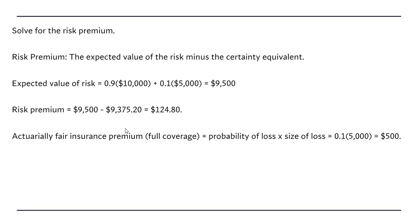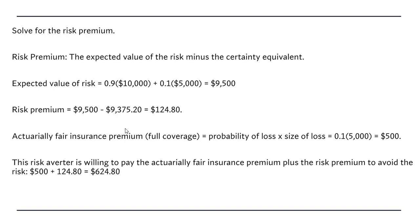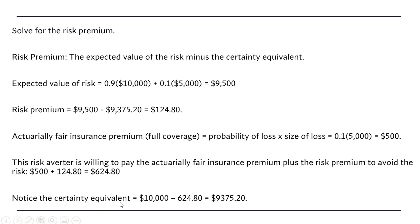For someone that is risk averse, the risk averter is willing to pay the actuarially fair insurance premium plus the risk premium to avoid the uncertainty. So in this case, a risk averter would be willing to pay as much as $624.80 for a full coverage insurance policy. Note that your wealth of $10,000 minus this $624.80 gives you the value of the certainty equivalent.